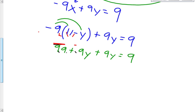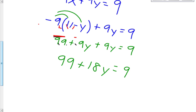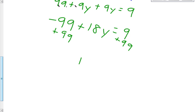Okay, ignore the red. So now, let's solve for y. So we have -99 + 18y = 9. Now, if we add 99, we're going to get 18y = 108. And then when we divide both sides by 18, we get an answer of y = 6. 108 divided by 18, y = 6.